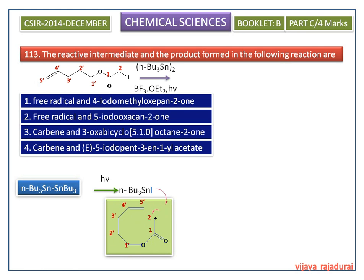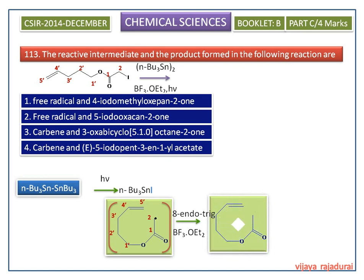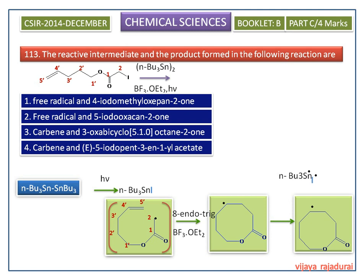This radical undergoes 8-endo-trig cyclization in the presence of Lewis acid, giving another radical. This radical then abstracts iodine from tertiary butyl tin iodide, giving 5-iodo-oxan-2-one as the product.